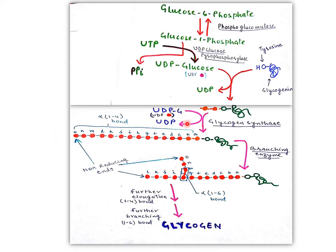Fifteen UDP-glucose molecules are added in sequence; each releases glucose and is recycled back to UDP. In the presence of glycogen synthase, these glucose units are linked to form a straight-chain glycogen. This straight-chain glycogen is then converted by the branching enzyme into a highly branched glycogen molecule through formation of alpha-1,6 bonds. In this way, the glycogen molecule is synthesized from glucose.